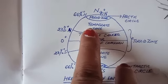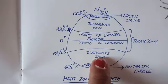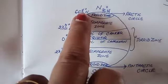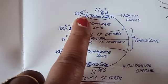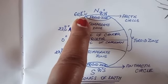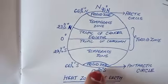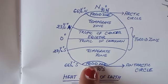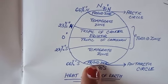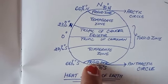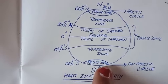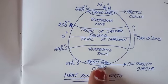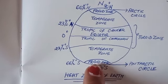At the temperate zone we feel neither too hot nor too cold. And at the frigid zone, too much cold is present. Antarctica, the coldest continent, is present at the south pole in the frigid zone only.